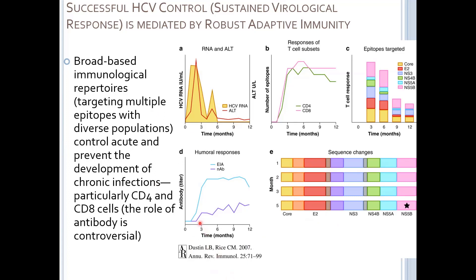If you look at antibody responses, total antibody levels go up and stay very high, but neutralizing antibodies make up a small proportion of that response — and these people are still controlling and clearing the viral infection. There's a lack of correlation between neutralizing antibody and viral RNA. Only one single mutation was observed causing immune escape within a specific epitope — the NS5B protein had multiple CD4 and CD8 targets, and one mutation was acquired allowing the virus to escape that recognition.